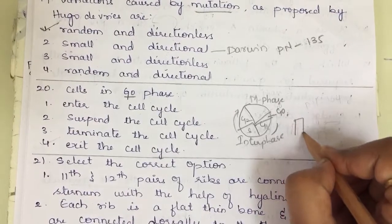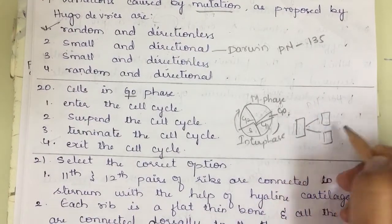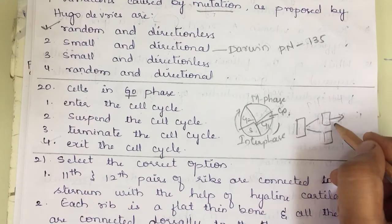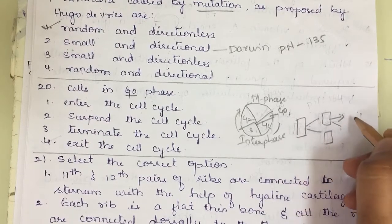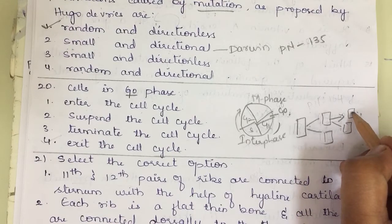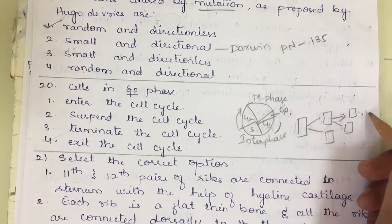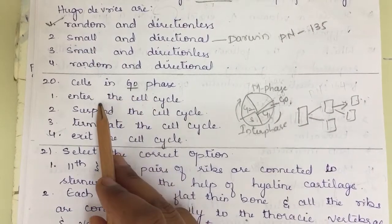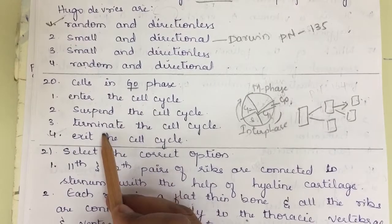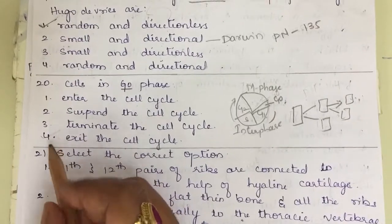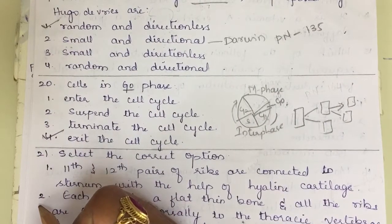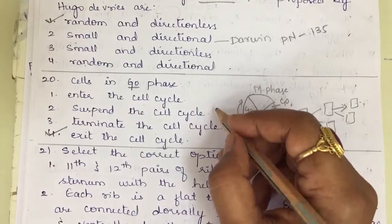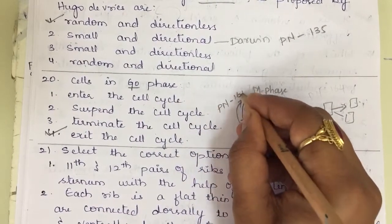After division, one daughter cell can enter G0 phase to become a tissue or organ, while another re-enters G1 phase for the next cell cycle. In G0 phase, cells exit the cell cycle — they do not suspend or terminate it, because other cells continue the cycle. The correct answer is 'exit the cell cycle.' This question is from first year, page number 164.